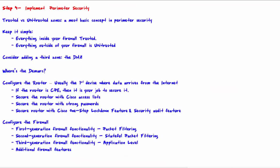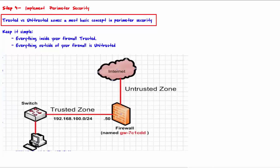Welcome to step four: implement perimeter security. The most basic concept in perimeter security is trusted versus untrusted zones. The trusted zone is everything inside your network; the untrusted zone is anything outside — that is, the internet. Best practice demands there be only one point on the perimeter where data packets can pass in and out. A firewall is placed at this single point to regulate specifically what is allowed in and what is allowed out.